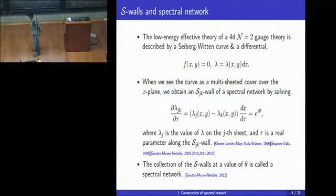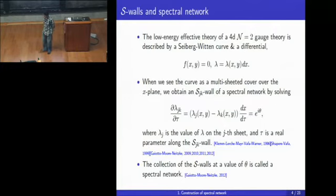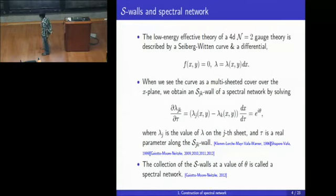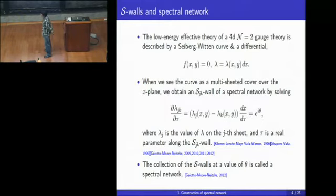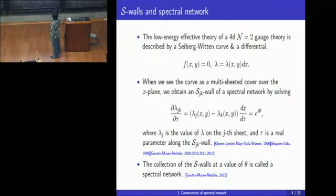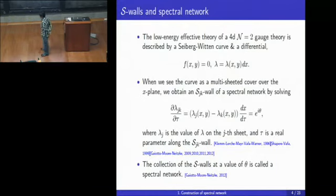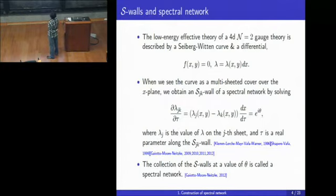One convenient physical picture to have in mind when we consider 4D N=2 theory and spectral networks is considering an M5 brane wrapping a Seiberg-Witten curve described by, for example, f(x,y)=0. The low-energy effective theory of that M5 brane gives us the 4D N=2 theory, and a BPS state of the 4D theory will be given by an M2 brane whose boundary runs along the Seiberg-Witten curve. When we consider the Seiberg-Witten curve as a multi-sheeted cover over a punctured Riemann surface coordinatized by x, that boundary of an M2 brane will be projected onto the base space as a one-dimensional curve, which follows the differential equation given by the difference of the Seiberg-Witten differential.